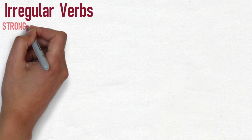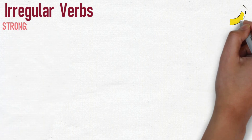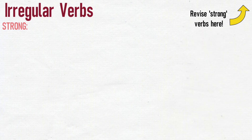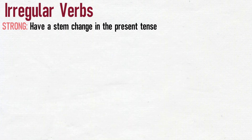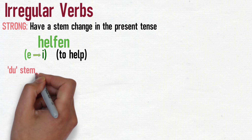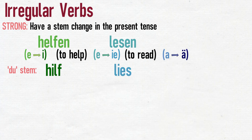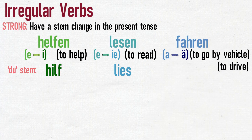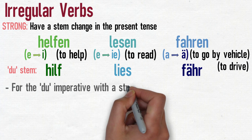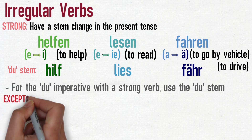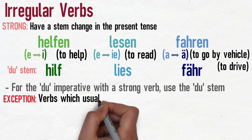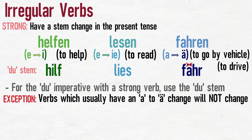For irregular or strong verbs, there's a slightly different rule. Strong verbs have a stem change in the present tense, and the three most common are: E to I, in verbs such as helfen (to help), whose du stem is hilf; E to IE, in verbs such as lesen (to read), whose du stem is lies; and E to E-umlaut, in verbs such as fahren (to drive), whose du stem is fähr. In the imperative du form, you use the du stem, except that verbs with an E to E-umlaut change do not apply that stem change.